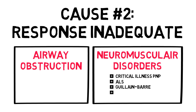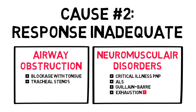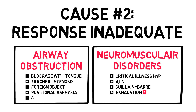However, a common neuromuscular cause you may never forget is exhaustion, after a patient has been breathing heavily for a while. Examples of upper airway obstruction are blockage by the tongue in sedated patients — so they have two reasons to have a respiratory acidosis — tracheal stenosis, or obstruction by a foreign object. Examples of lower airway obstruction are positional asphyxia when people are restrained, but more commonly in asthma or COPD.